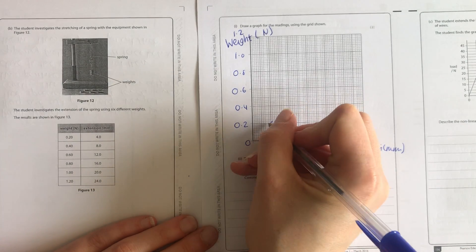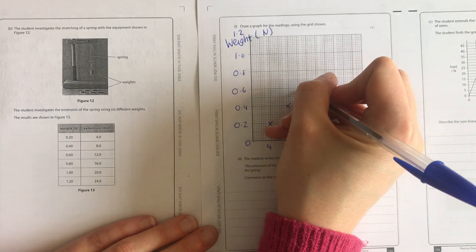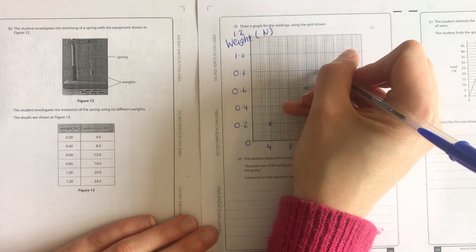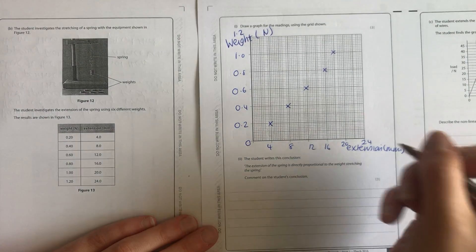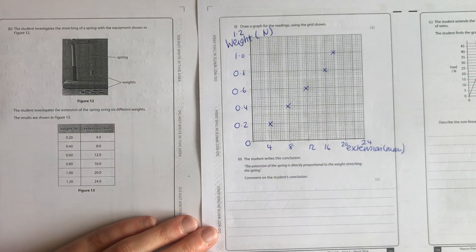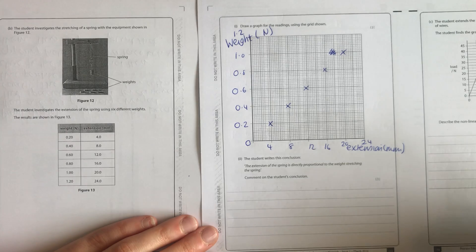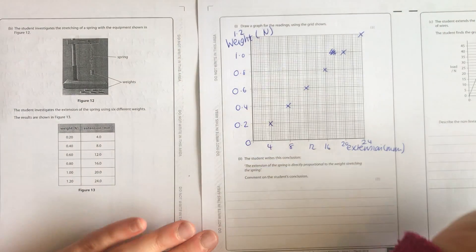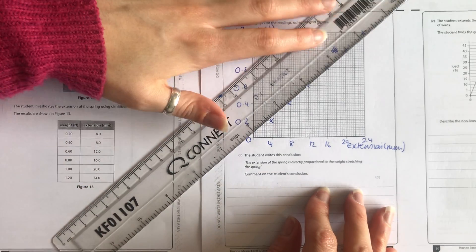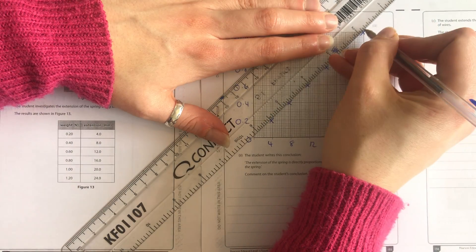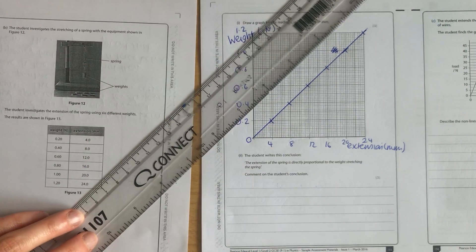So 0.2 goes with 4, 0.4 goes with 8. This is pretty easy. 0.6 goes with 12, 0.8 goes with 16. I've done something wrong there, I can tell straight away. Sorry, that's the wrong one. 1 goes with 20, and 1.2 goes with 24. I would always do this in pencil. I'm doing it in pen so it's easier for you to see. Then you're going to draw your line of best fit, which for this is a perfect line straight through the origin, which is convenient for the next question.